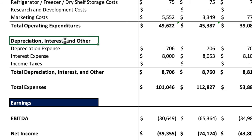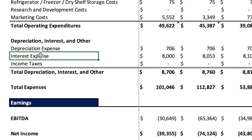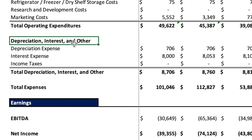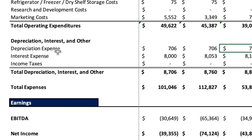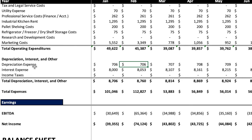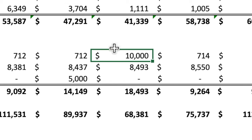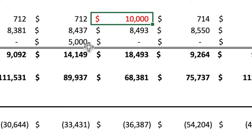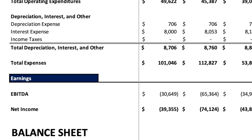Jumping to non-operating expenses: depreciation, interest, and income taxes. Depreciation should be straight-lined each month — we see around $706 consistently, but then a $10,000 slug in October. That's something to question: it could be the company writing off fixed assets, or it could be an error. Definitely something to flag and investigate.